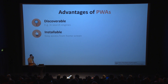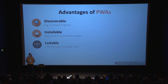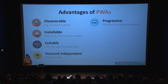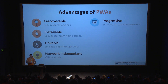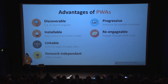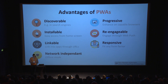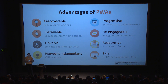PWAs are installable, meaning you can access them from the home screen. They are linkable — they use regular URLs and you can link into a Progressive Web App, which is much harder in native apps. They're network independent, so when your network goes offline you can continue using them. They're progressive, which means they don't require the newest browser, but when you have it, they enhance your experience. Re-engageable via web push notifications. Responsive — they fit any form factor. And they are safe, requiring HTTPS and recognizable URLs.